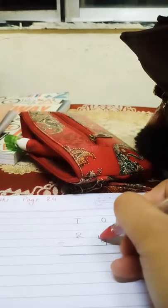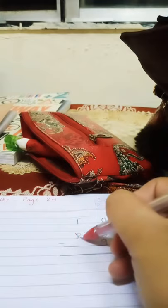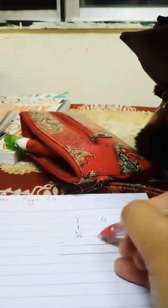Similarly we go to the next sum over here. We have our two columns 1s and 10s. 5 cannot take away 9. So we borrow 1 from 2. So when 2 gives away 1 it changes to 1. We get the number 15.